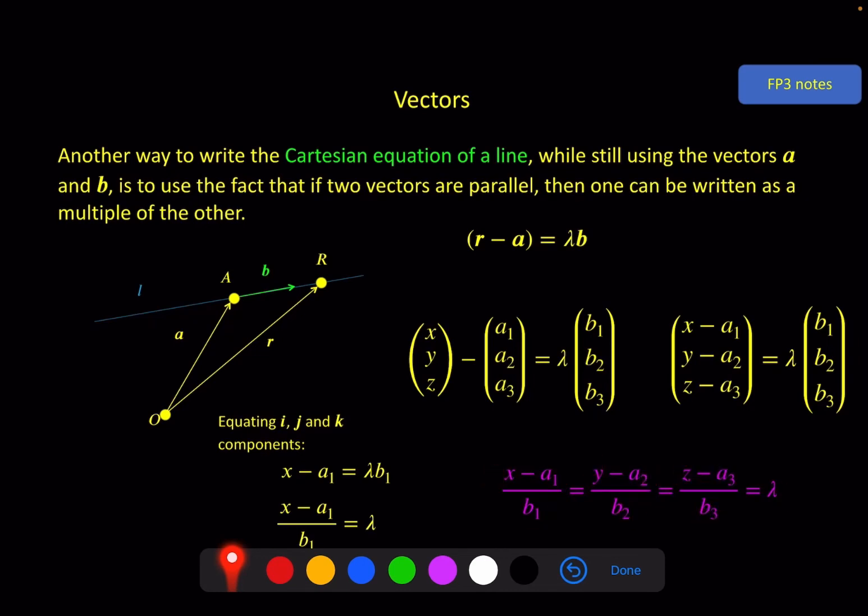But again, notice if you know a and you know b, then you can write down this equation. Because x, y, and z and lambda all depend on where exactly the point is. If you fix that, it's a fixed point in your question, it's not the general equation of the line. So with all of these forms, although they look very different, if you know a and you know b, it's quite easy to write them down.